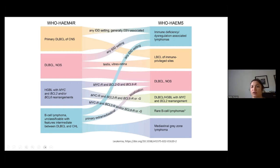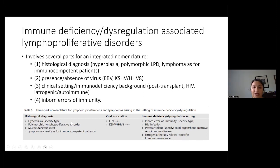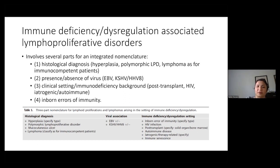This new classification of immunodeficiency and dysregulated LPDs is a bit complicated. In the past we would diagnose something as PTLD or iatrogenic LPD, but now what they suggest is actually a multi-part diagnosis where you give the histologic diagnosis including the morphology of what you're seeing, the viral association, as well as the immune deficiency setting — in order to give the clinical team a better idea of exactly what they're facing. This is a change from the prior WHO classification.